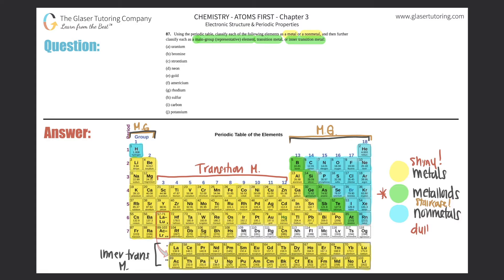Element a: Uranium. Uranium's symbol is U, and it's atomic number 92. On the periodic table it's shown in yellow, so it's a metal. It's located in one of the two bottom periods, so it's an inner transition metal.